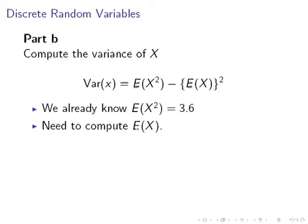Now, let's look at the second question. Compute the variance of X. We're going to use this formula here. The variance of X is the expected value of X squared minus the expected value of X to be squared. I can't emphasize enough that there is a very important distinction between the two. We already know the expected value of X squared is 3.6, but what we have to do is compute the expected value of X.